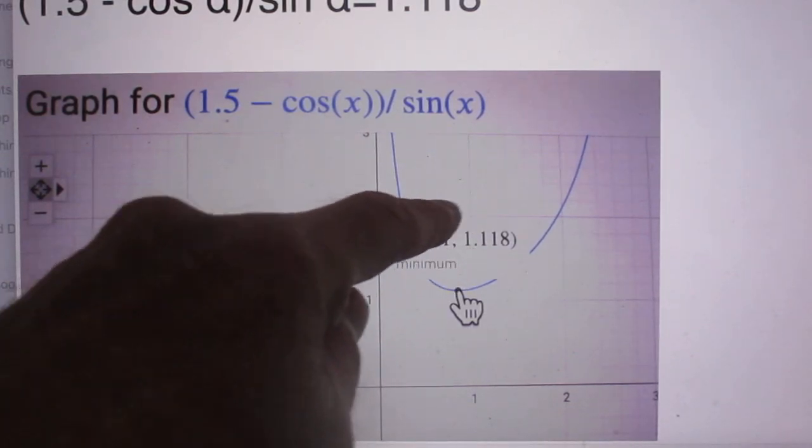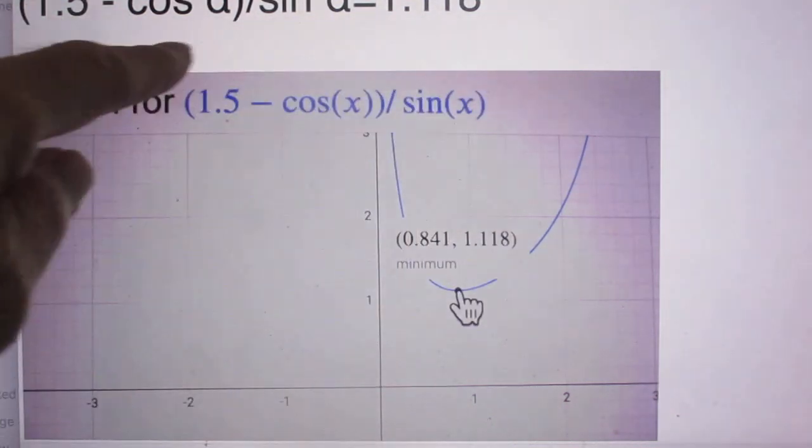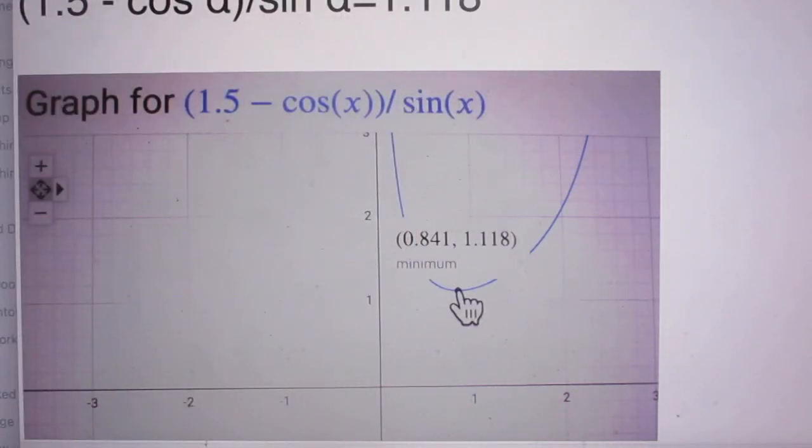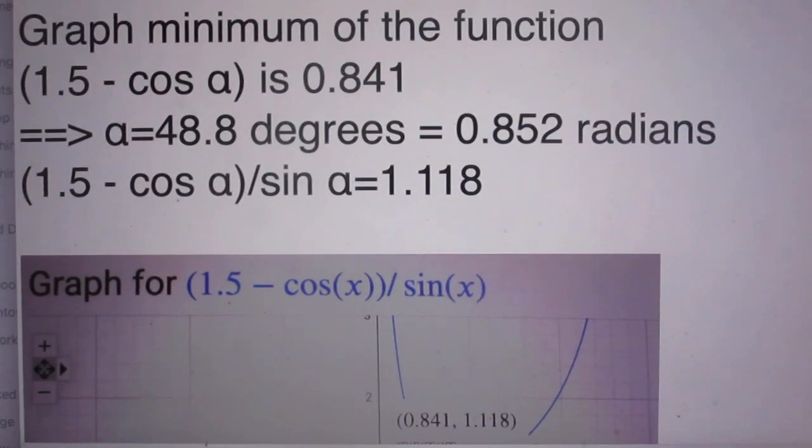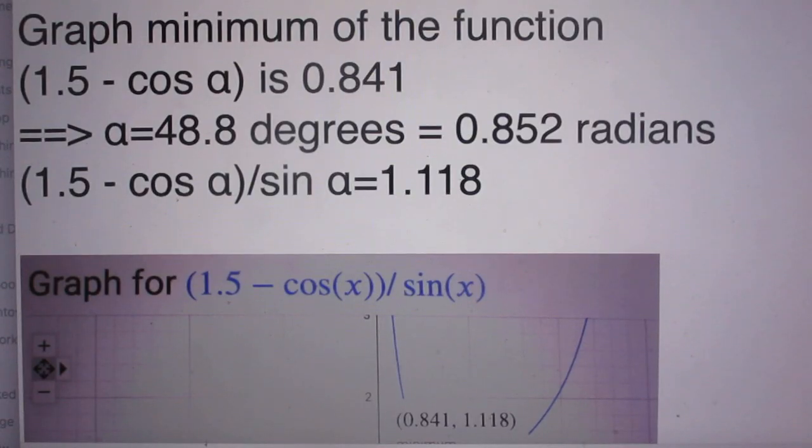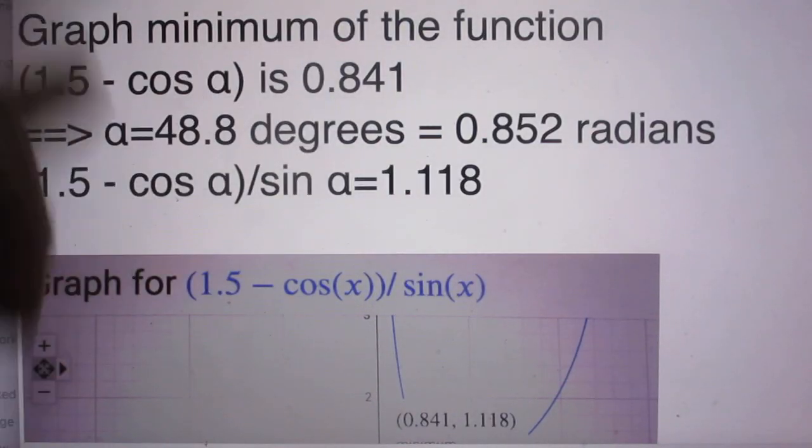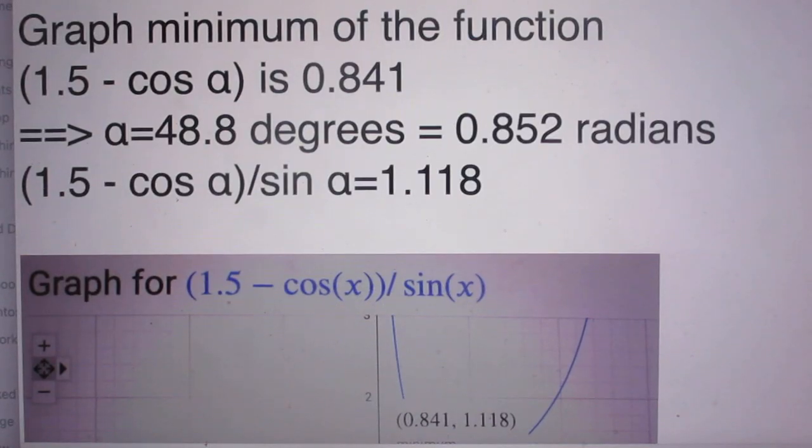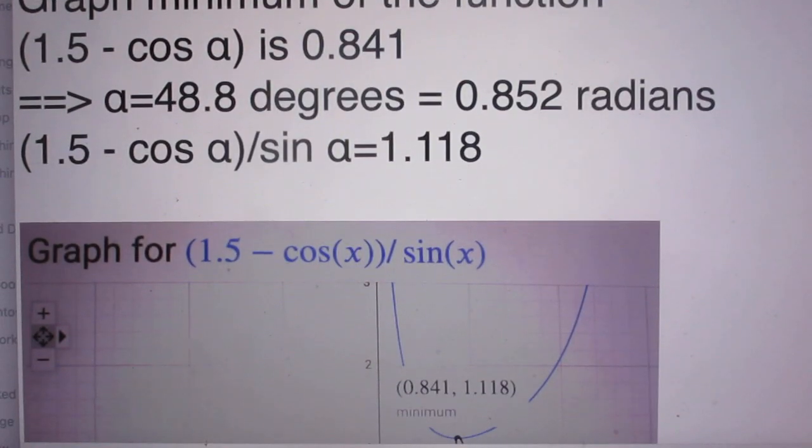So we will concentrate now only on the function that is relevant in our case. And we want to know where that minimum is. And Google is so nice that it shows you both this value at the minimum and this value at the minimum. There is 0.841 and there is 1.118. And so once you take that, then you can calculate alpha. If you know that 1.5 minus cosine alpha is 0.841, then you find that alpha is 48.8 degrees.